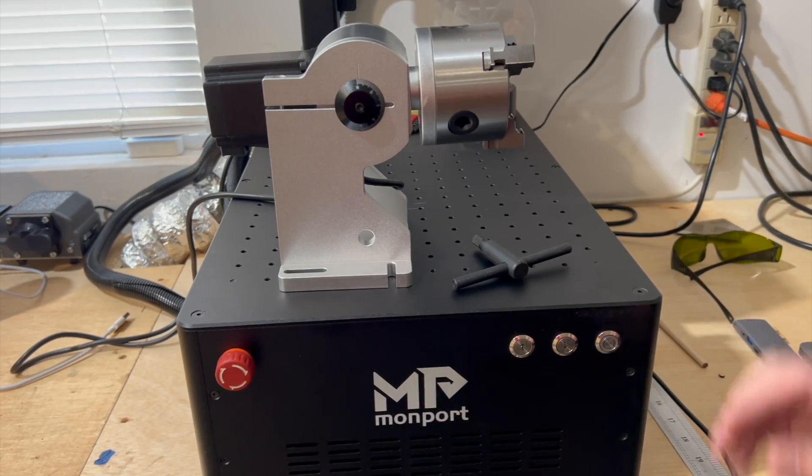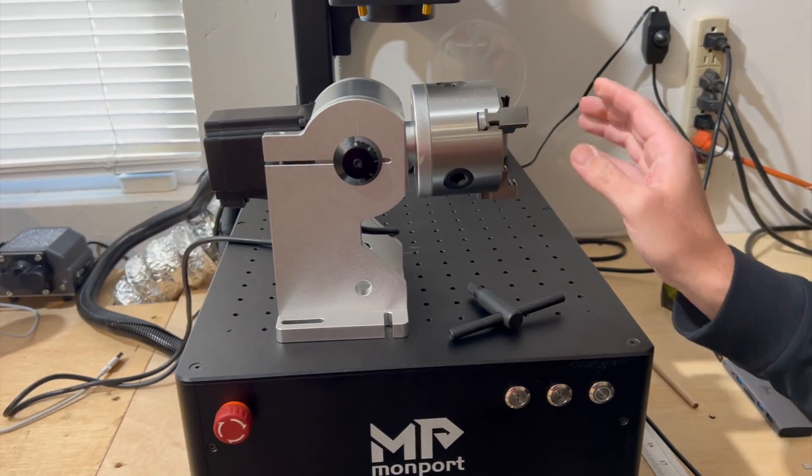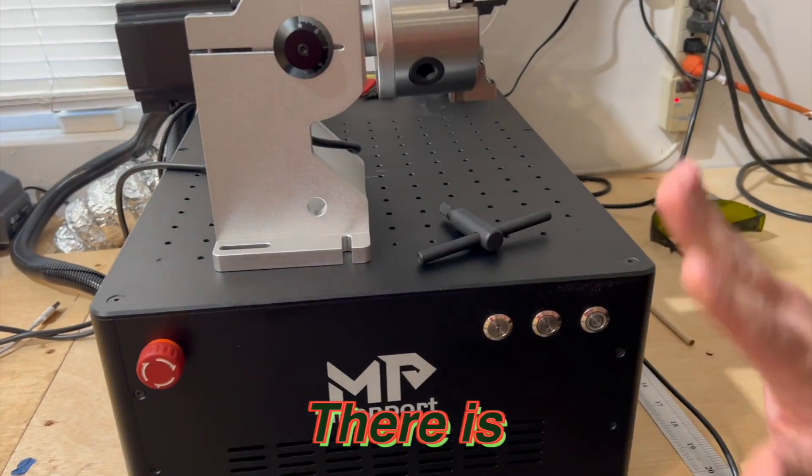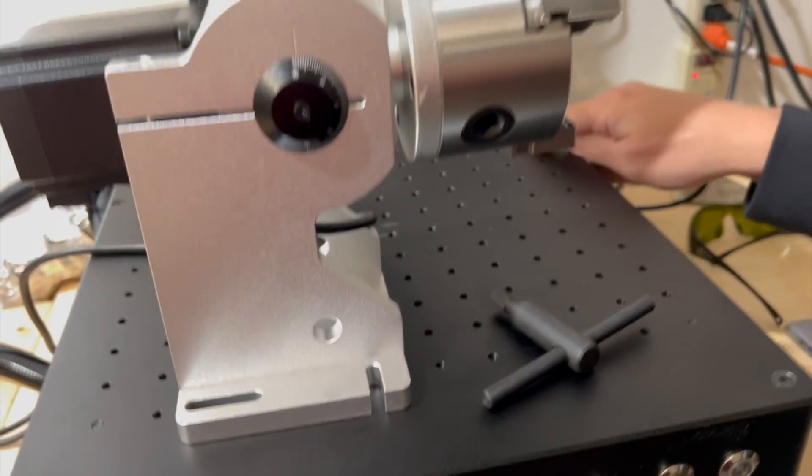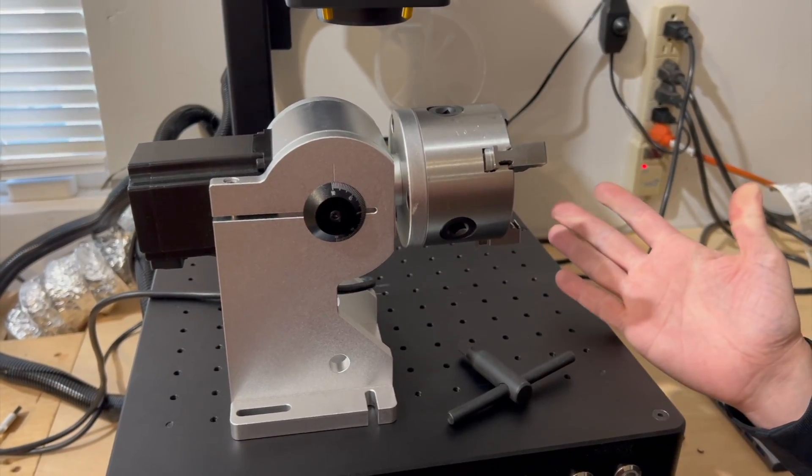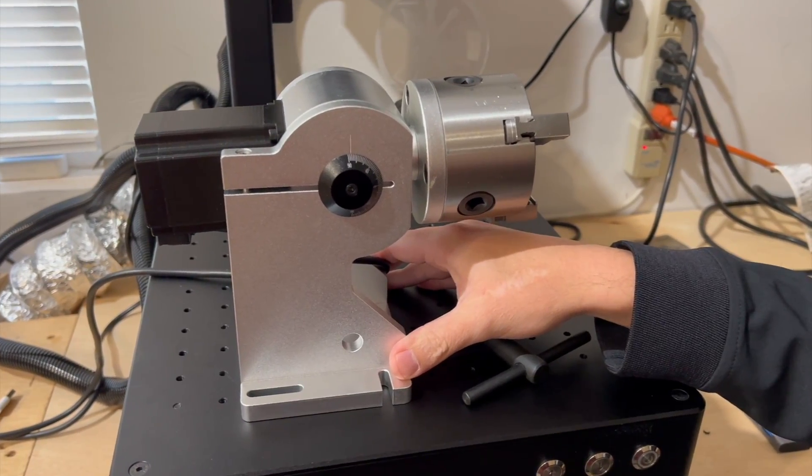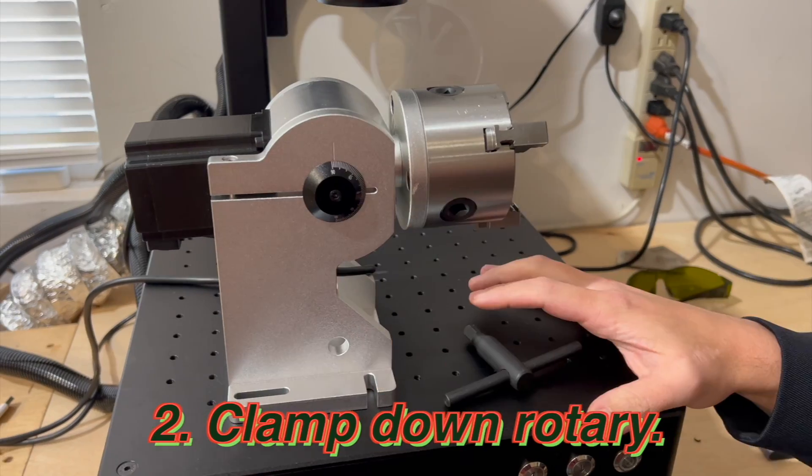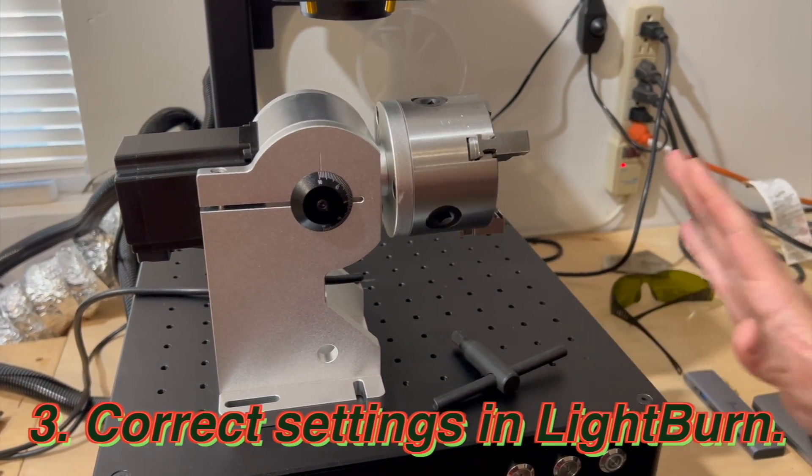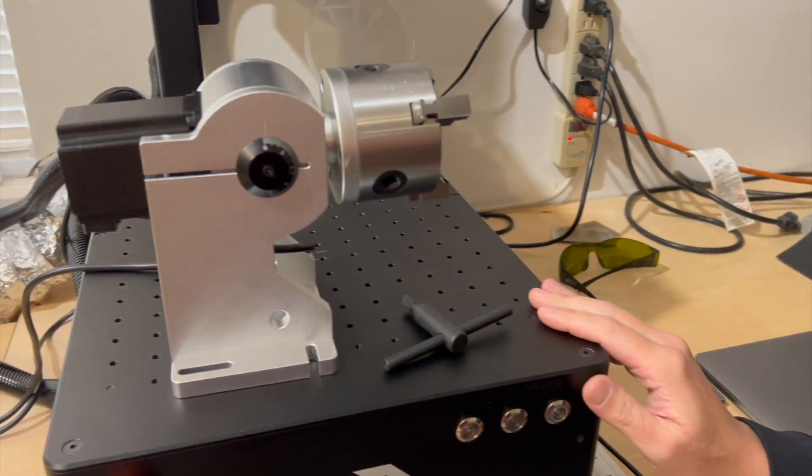So Momport sent us over this rotary to use with the fiber laser. There is no assembly required, and all it really requires is you to plug it in the back of the machine. So the setup isn't that difficult. Really, what we'll just need to do is get this centered under the lens, clamp it down with some bolts, and get the settings correct in Lightburn. That's kind of the real chore.